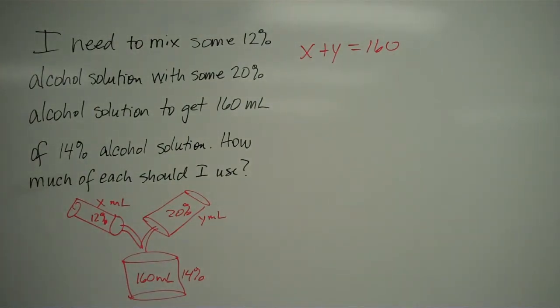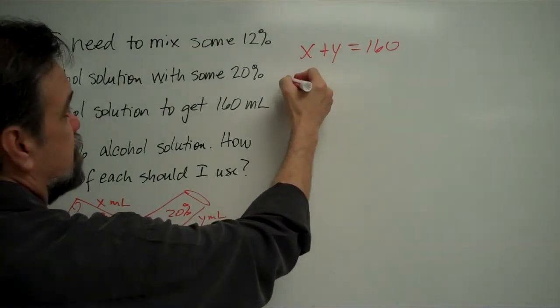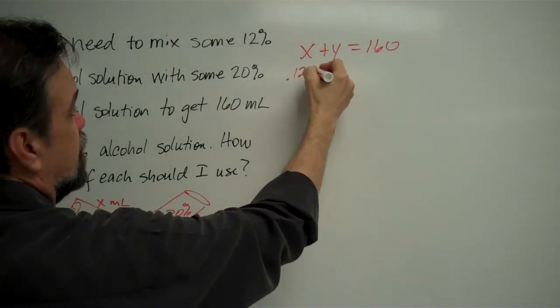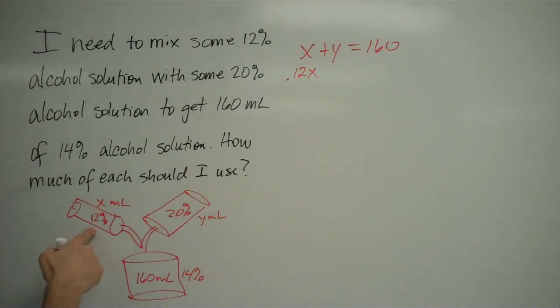Now, let's look at the amount of alcohol that is in there. Okay, this is a 12% solution. What that means is, 12% of this liquid is alcohol, and the other 88% is something neutral like water. Okay, 12% of how much? 12% of the x milliliters. So that means I have 12% of x, which we write as 0.12x milliliters of alcohol in this one.